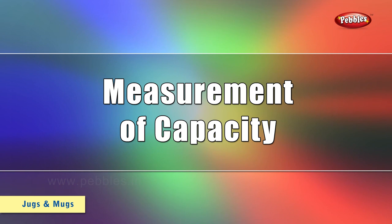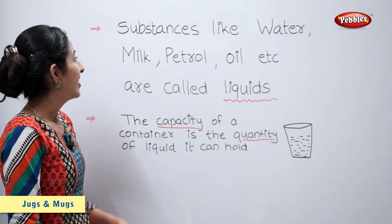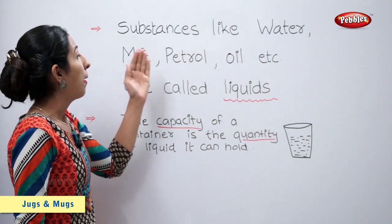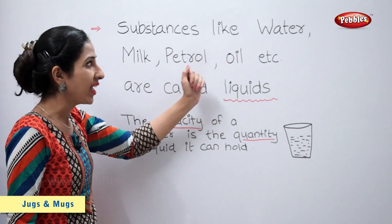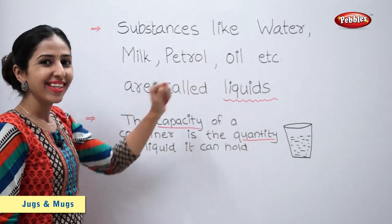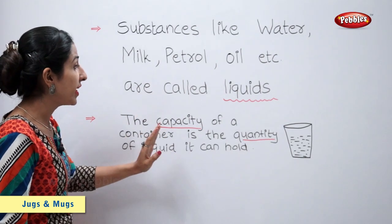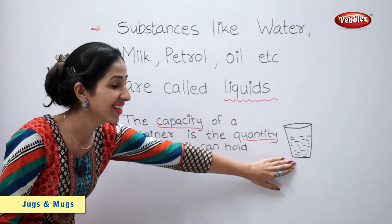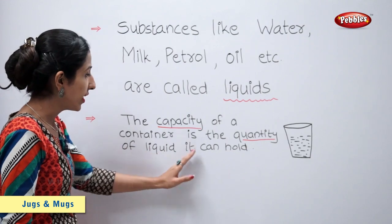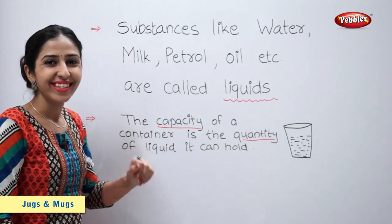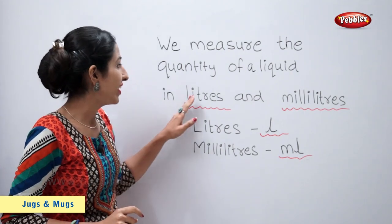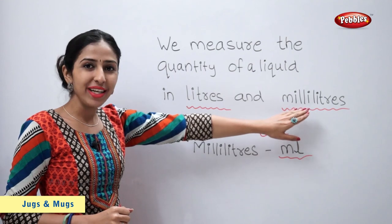Measurement of capacity. Substances like water, milk, petrol, oil etc. are called liquids. The capacity of a container is the quantity of liquid it can hold. We measure the quantity of a liquid in litres and millilitres.